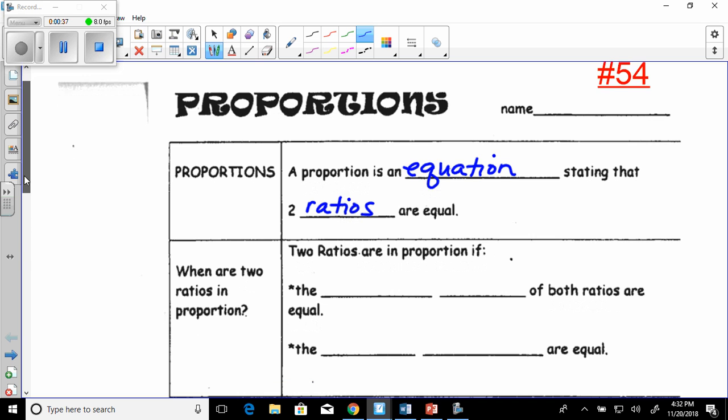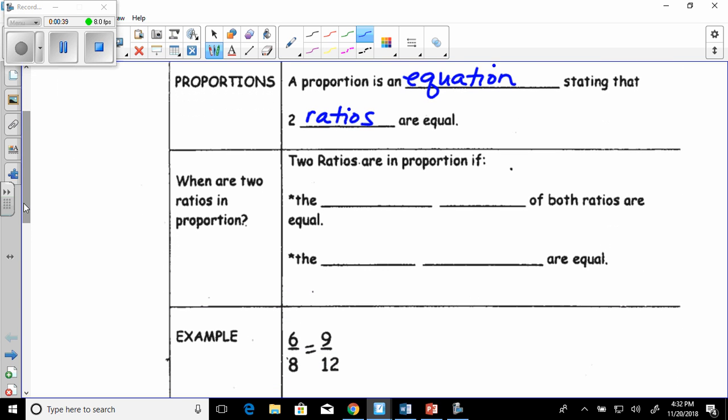And we've already gone over ratios in class. When are two ratios in proportion? Two ratios are in proportion if the lowest terms of both ratios are equal and the cross products, and I'll show you what that is in a minute, are equal.